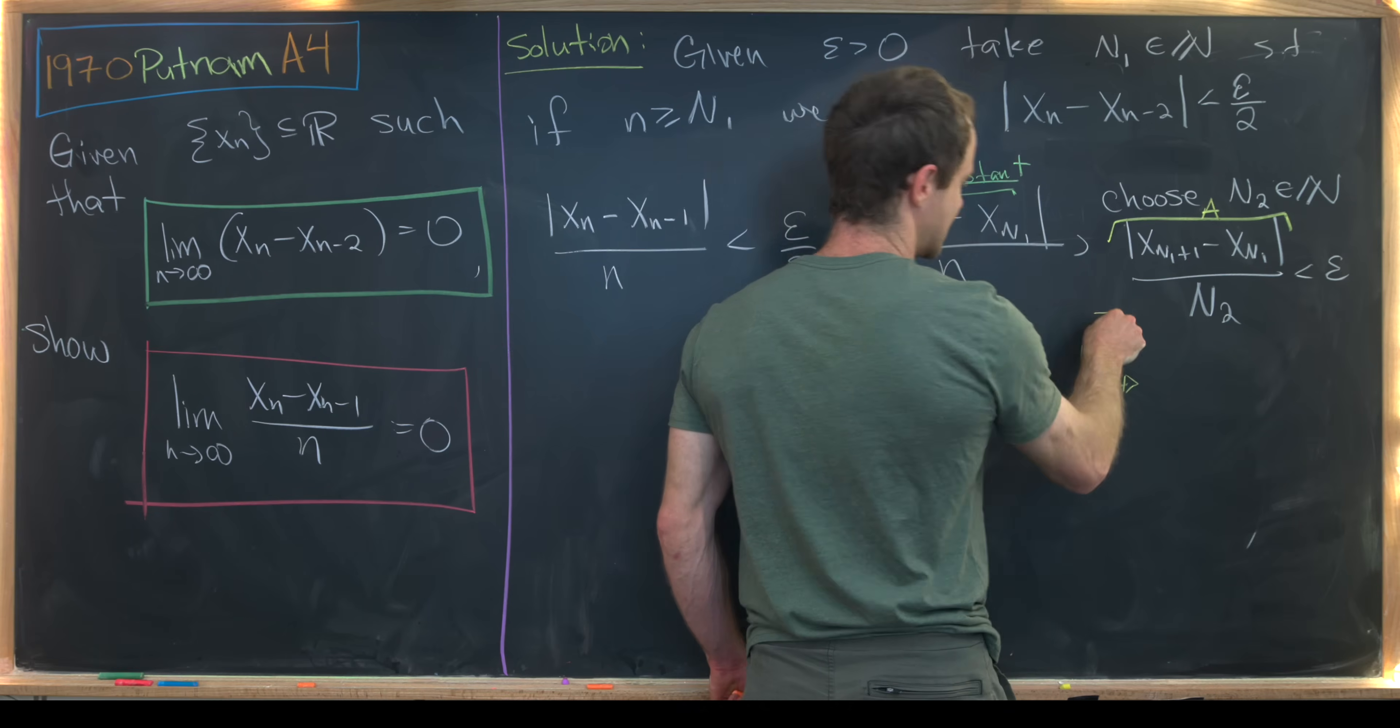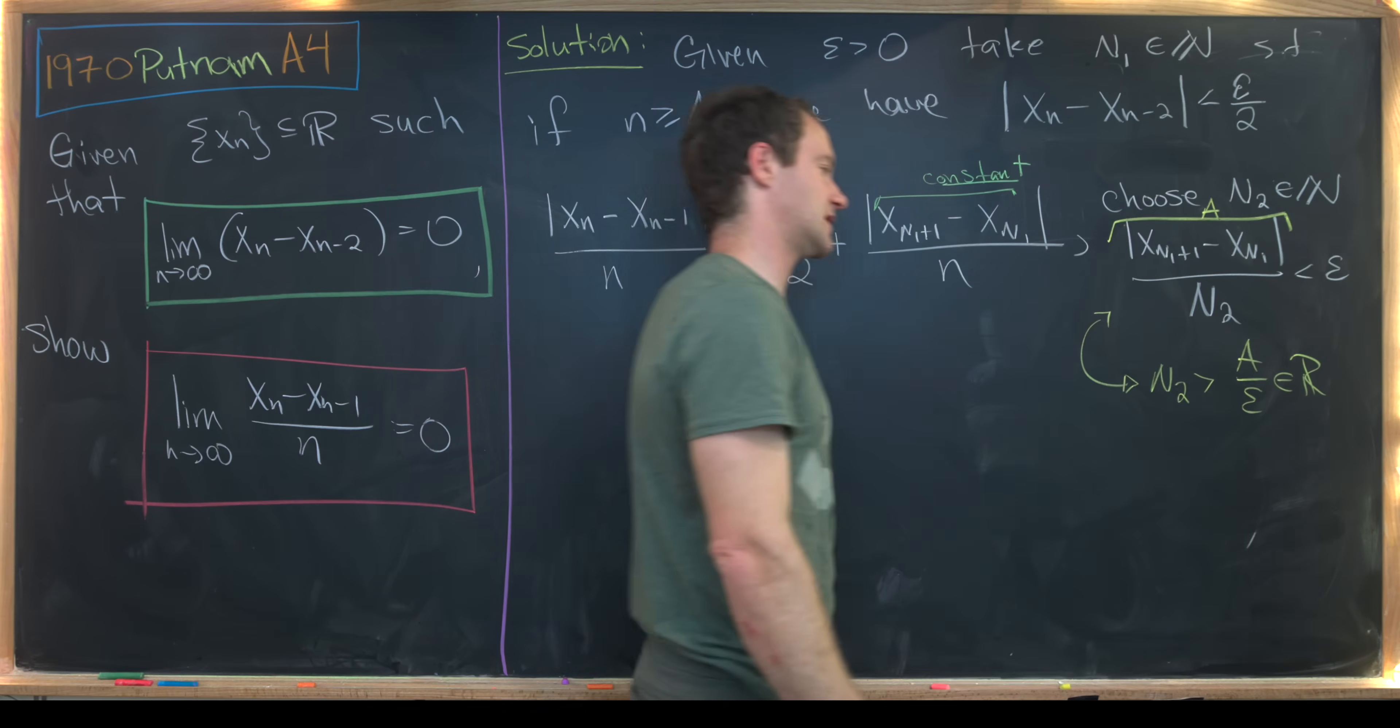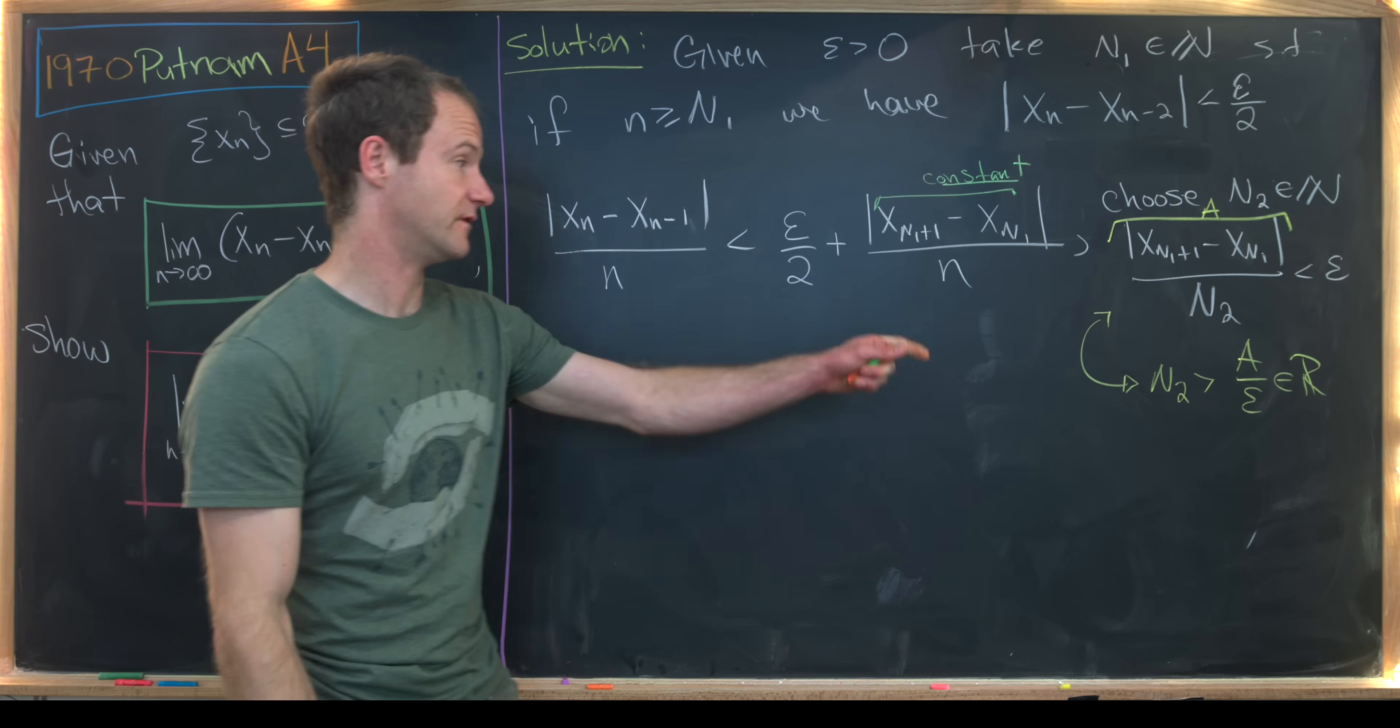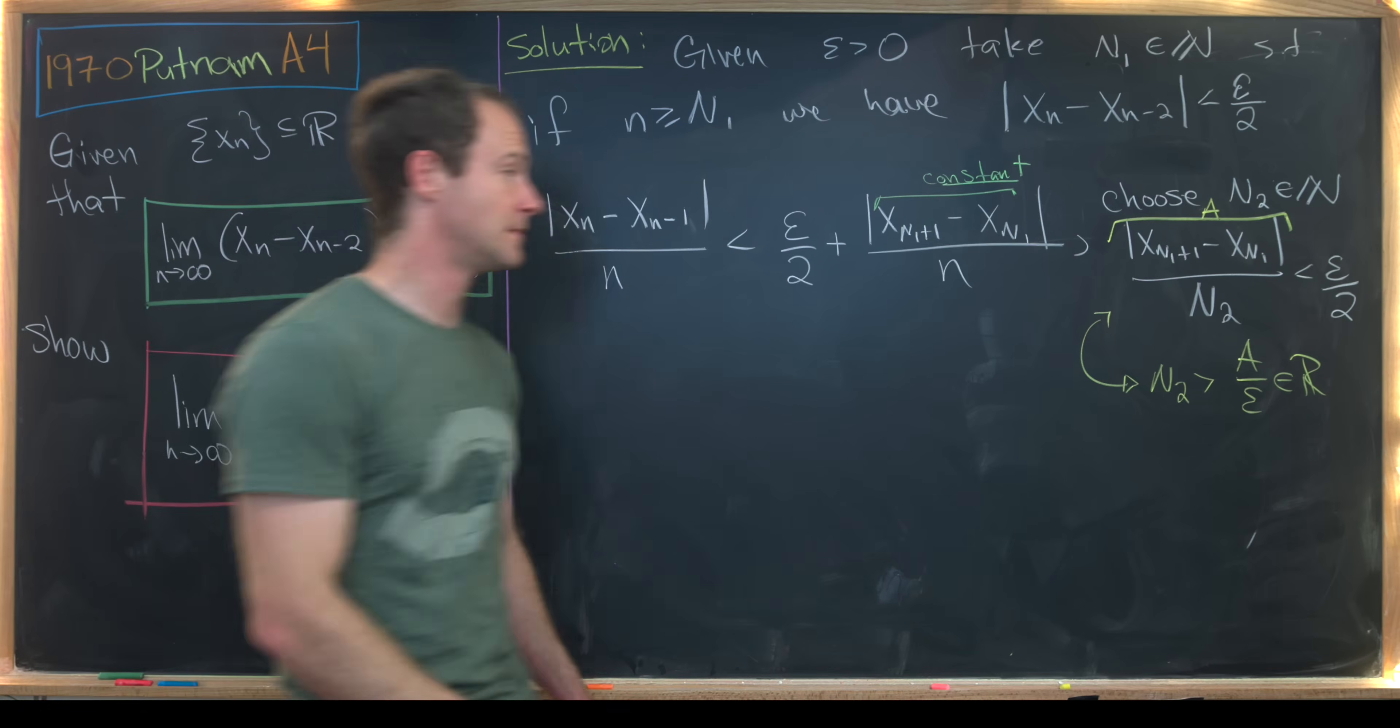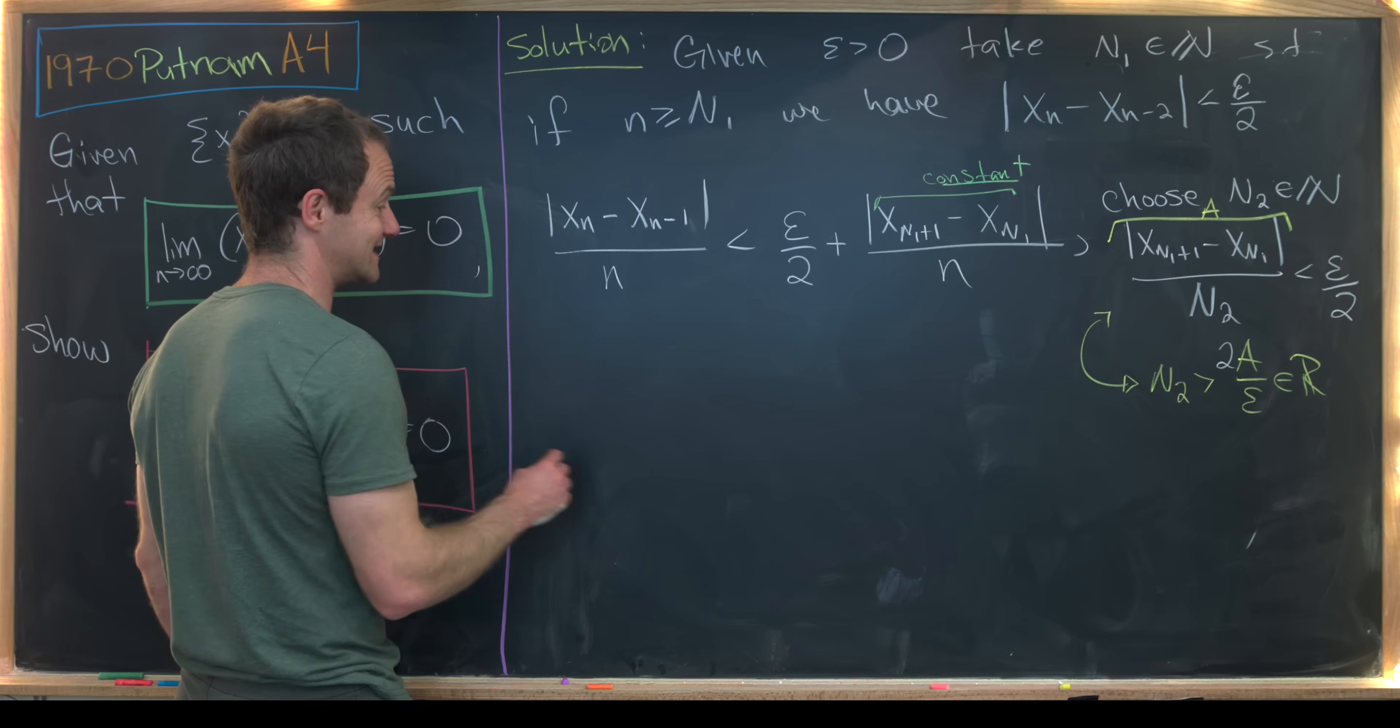And notice that that makes this statement up here equivalent to choosing N2 that is bigger than A over epsilon. But let's recall that A over epsilon is a real number. And by the Archimedean principle, we can always find a natural number larger than any real number. And that's what we've done, this N2. And now while we're at it, I'm just going to say that this is less than epsilon over 2. We can make that as small as we want. And that's going to put maybe a 2 right here. So that'll be 2A over epsilon. Again, by the Archimedean principle, that's possible. But now we're essentially done.